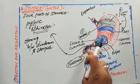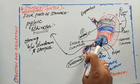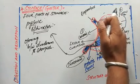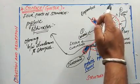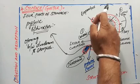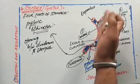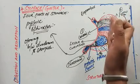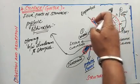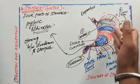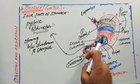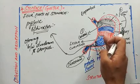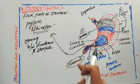To summarize, the stomach has two sphincters. The cardiac sphincter on the upper side guards the opening between the esophagus and the stomach. The pyloric sphincter guards the opening between the stomach and the duodenum.